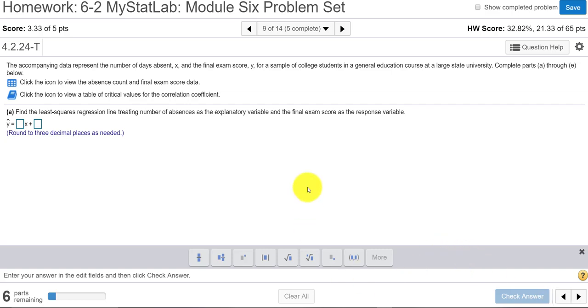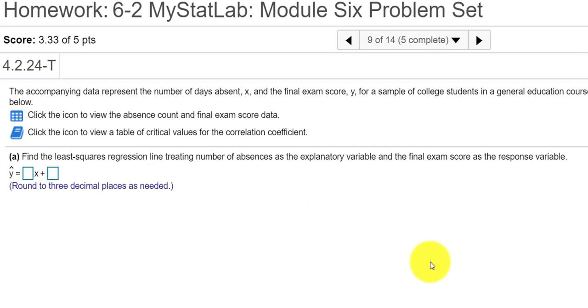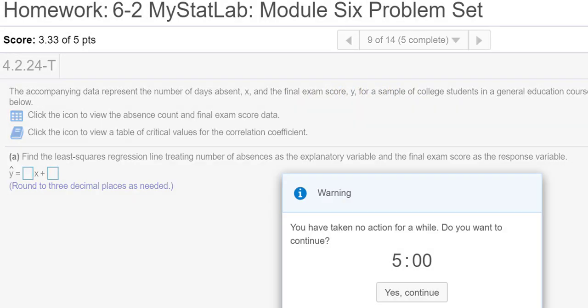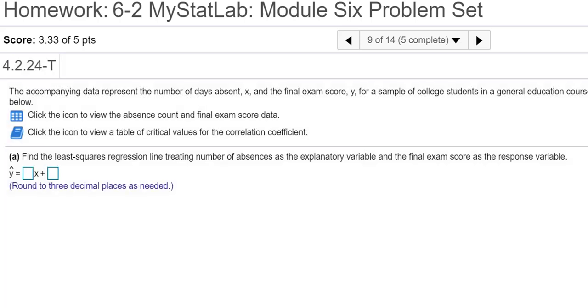Hello class. I'd like to solve problem 9 from the 6-2 homework set. So it looks like we have data that will represent the number of days a student is absent. Call that x. And the final exam score, we'll call that y, from students in a large university. So it says complete parts A through E.